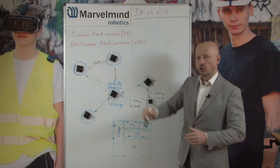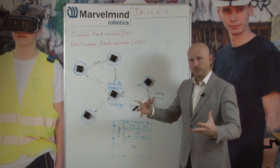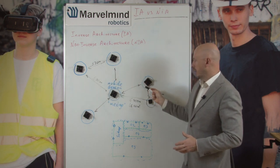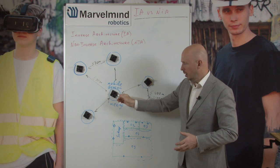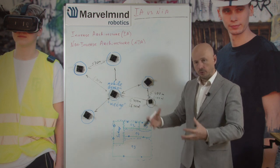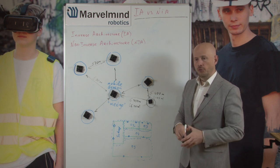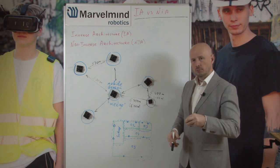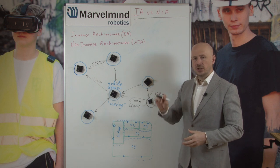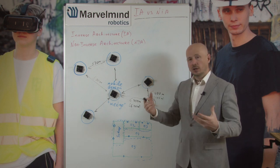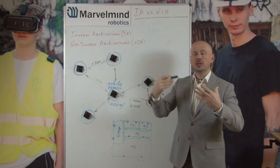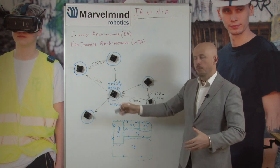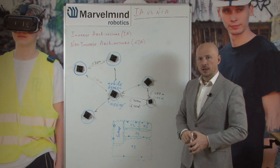In inverse architecture, which is around ten times more complex internally, stationary beacons are emitting ultrasound and the mobile beacon is receiving. This brings the greatest benefit of inverse architecture: you can have many mobile beacons without location update rate reduction. It's like real GPS — satellites emit radio and your receiver picks up pulses from all those beacons, so millions of receivers can work simultaneously.